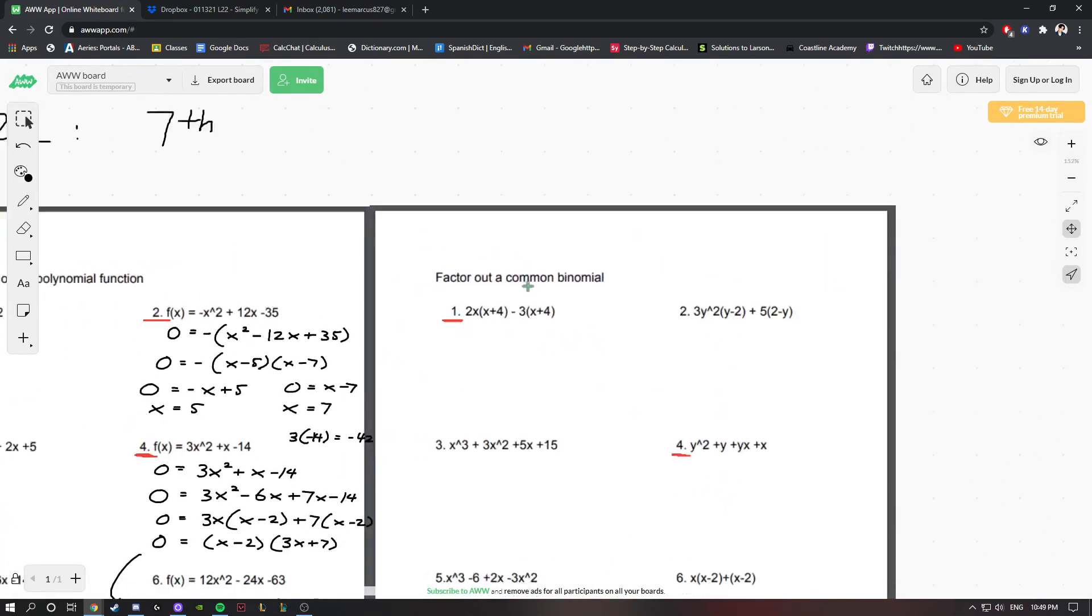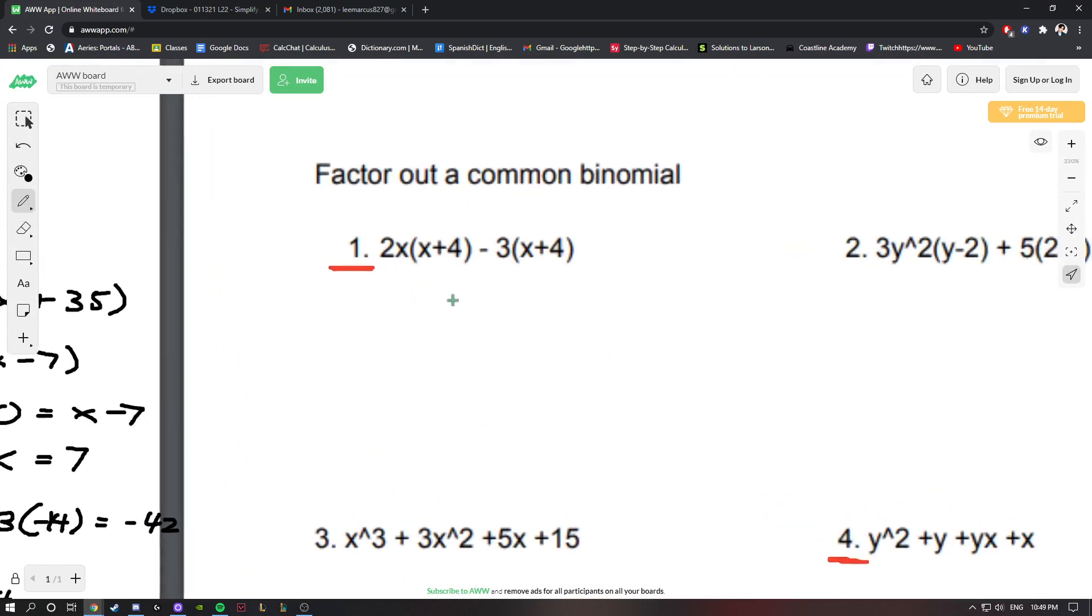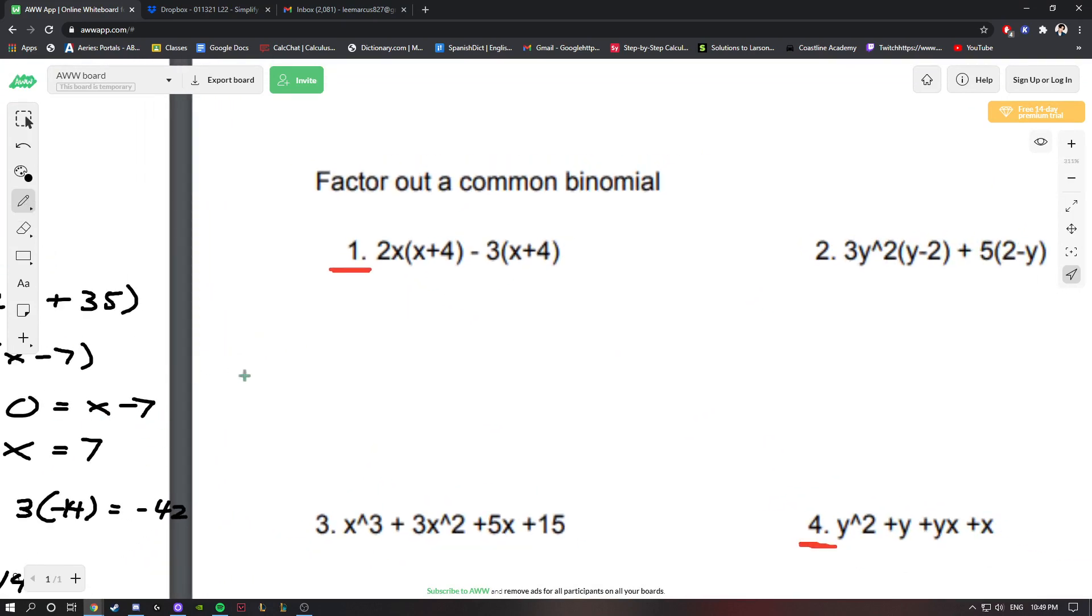Finally, we're asked to factor out a common binomial. If you caught on to what I was doing in these previous problems where I was factoring by grouping, we're looking for two common factors in the equation and you could factor that out. For example, we have x + 4. We see that twice in parentheses, as I indicated with these arrows. We have one factor is (x + 4), and then after we've factored out x + 4, we want to look at our remaining terms, which are going to be 2x and -3, which I indicated in blue. So the other two factors are (2x - 3), and that's how you factor out the common binomial.